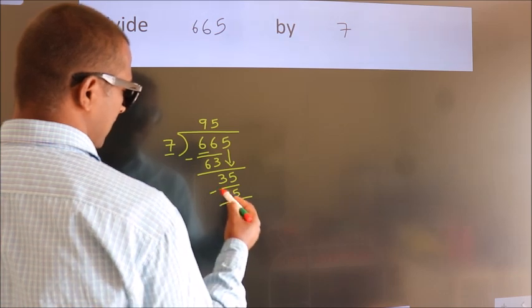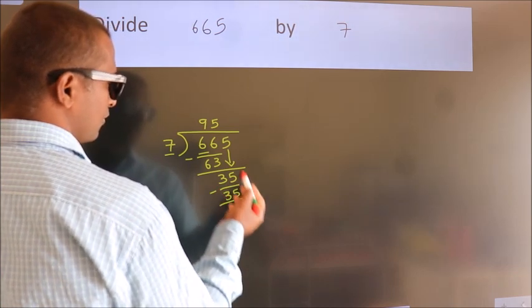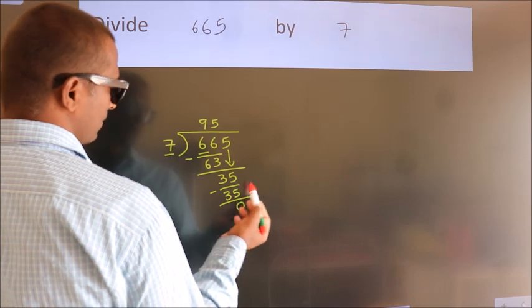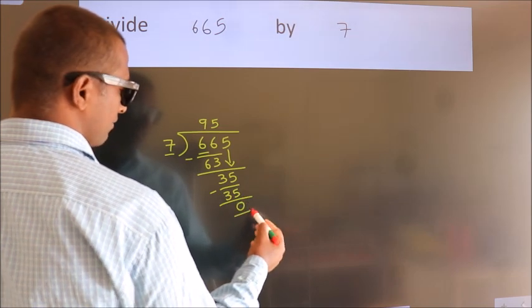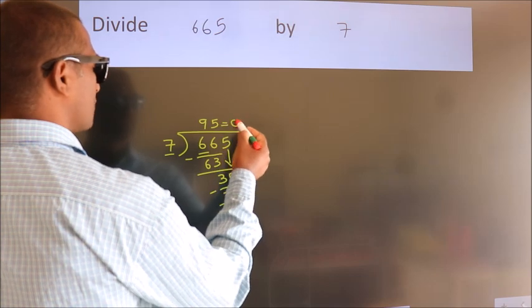Now we subtract. We get 0. After this, no more numbers to bring down. And we got remainder 0. So this is our quotient.